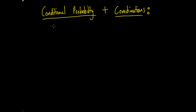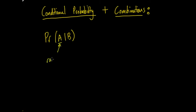The way you write it is: the probability of A given that B, using a straight vertical line. So P(A|B) means the probability of A given that B. A and B are just subsets, so you can insert any type of event — for example, the probability of rain given that it rained yesterday.